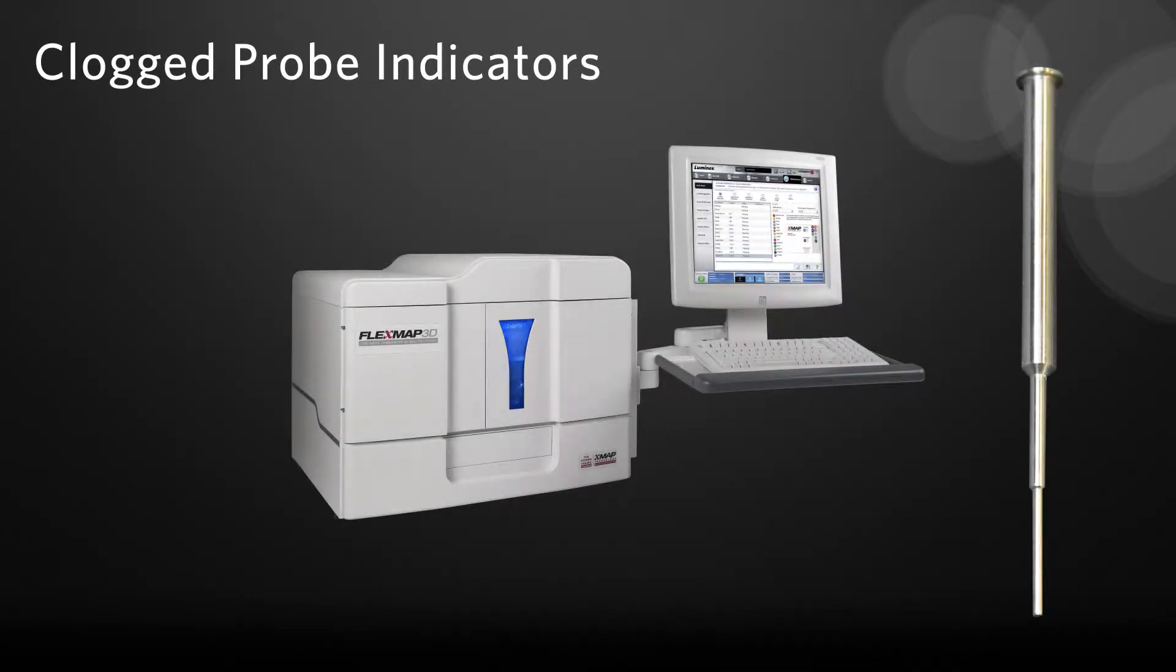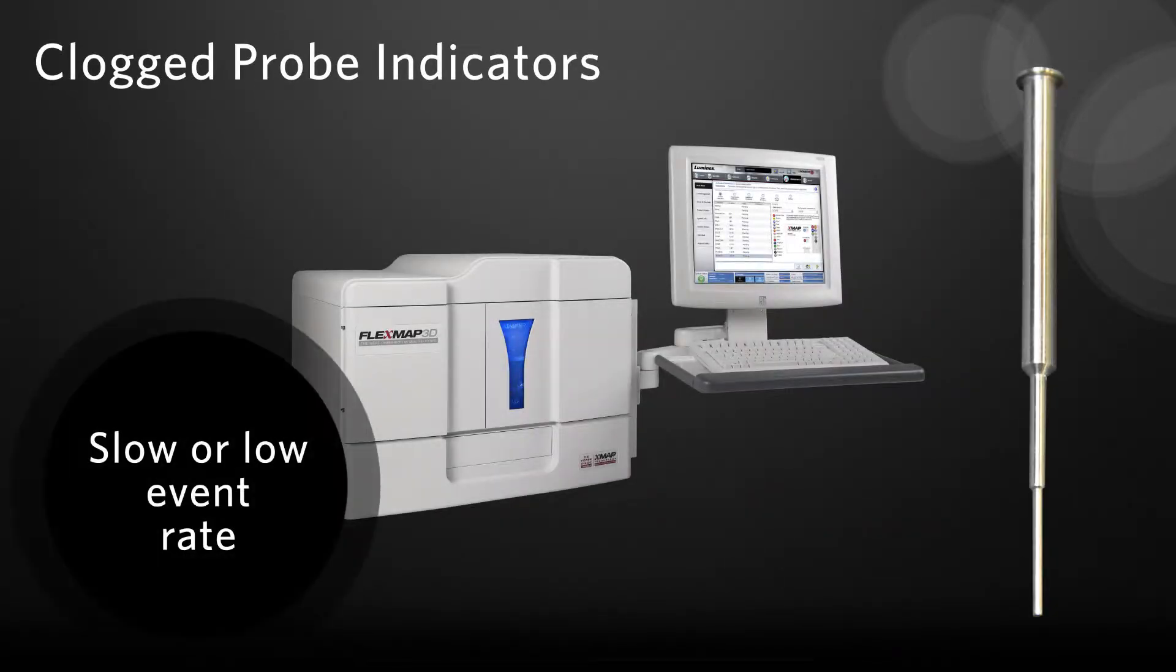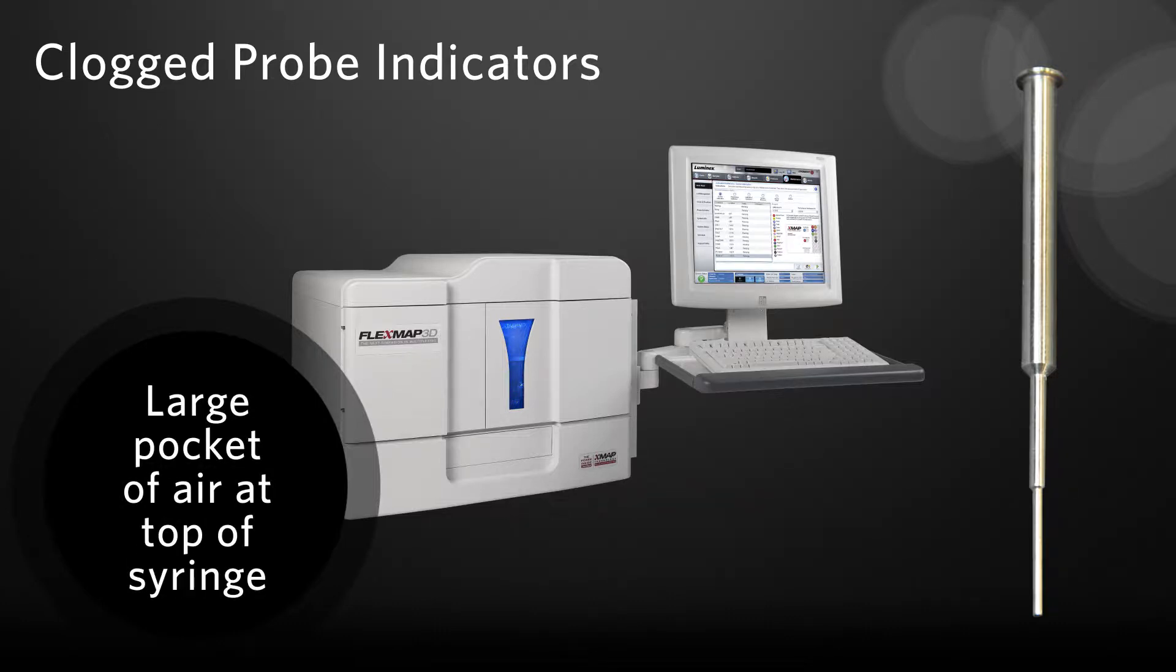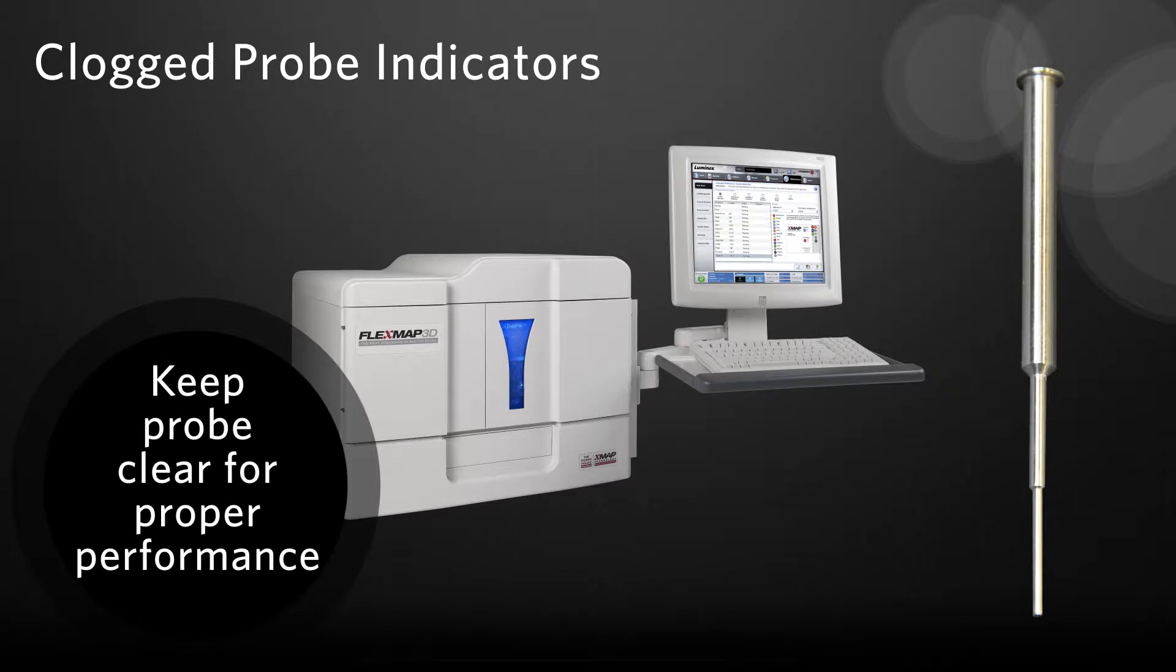Some indicators of a clogged probe are a slow or low event rate, calibration failure, sample empty errors, fluid dripping from the probe, bead shifting in the results, or a large pocket of air at the top of the syringe. Keeping the probe unclogged ensures proper performance of your FlexMap 3D.